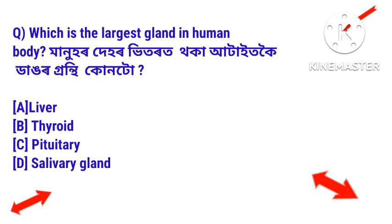Question 4: Which is the largest gland in the human body? Answer: Liver — the liver is the largest gland in the human body.